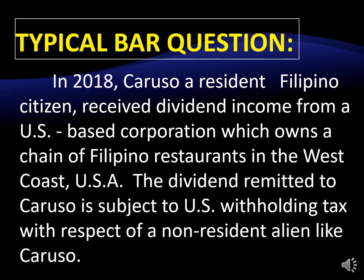In 2018, Caruso, a resident Filipino citizen, received dividend income from a U.S.-based corporation. He owns a chain of restaurants in the West Coast, U.S.A. You start analyzing the moment you see a particular set of FACs such as this one. For example, you have seen that Caruso is a resident citizen. He received income. Technically, how is he going to be taxed on that income?